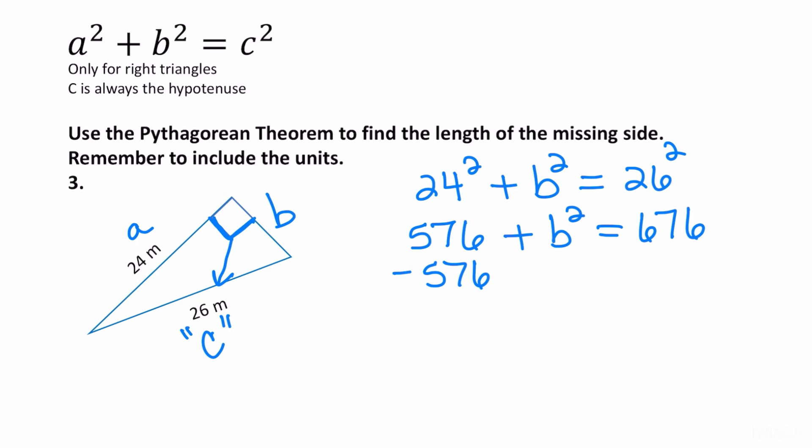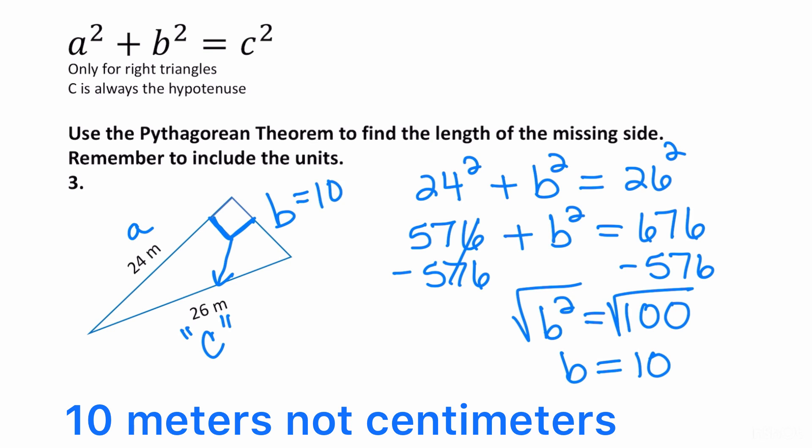So I subtract from both sides. I get B squared is equal to 100. You need to take the square root of both sides. So B is equal to 10. So the answer is 10 centimeters.